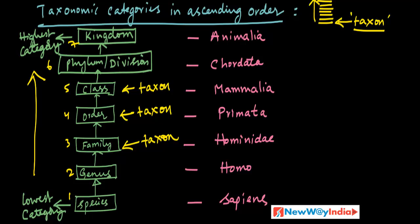For example, take man. The scientific name is Homo sapiens — genus and species. We are animals, so we are placed under kingdom Animalia, then phylum Chordata, class Mammalia, order Primata, family Hominidae, then genus Homo and species sapiens. This is the taxonomic hierarchy of man.